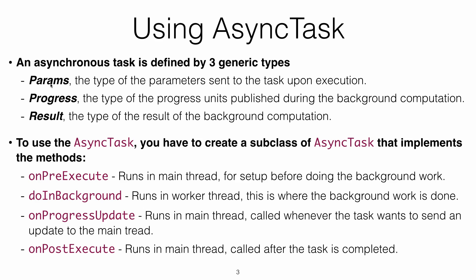All the communication and wiring between the main thread and the child thread is hidden from the user — AsyncTask takes care of all of that. To use AsyncTask, you create a subclass that implements its methods. The required method is doInBackground, which, as the name implies, runs in the child thread. All other methods run in the main thread.